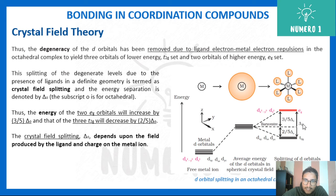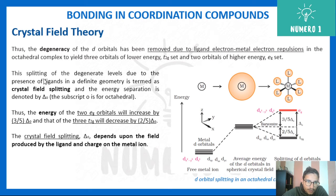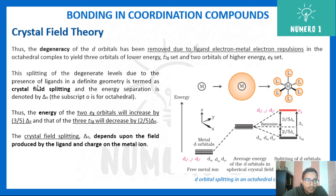In the octahedral complex, three orbitals form the lower-energy t2g set and two orbitals form the higher-energy eg set. The energy increased in eg equals the energy decreased in t2g — if you add the energies of both sets, you get the average energy level, so the net change is zero. This splitting of degenerate levels due to the presence of ligands in definite geometry is termed crystal field splitting.